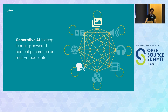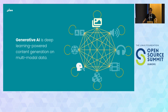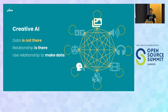Generative AI is deep learning-powered content generation on multimodal data. Why multimodal? When you start with text you get an image, but you can also start with image and get an image — you can sketch something by hand and ask the diffusion model to make it more realistic. This covers text-to-image, image-to-image, and in the future audio-based diffusion, mixing everything to create new content. In creative AI, you don't have the data but you have the relationship — you use your text prompt and your model's understanding to create the data.